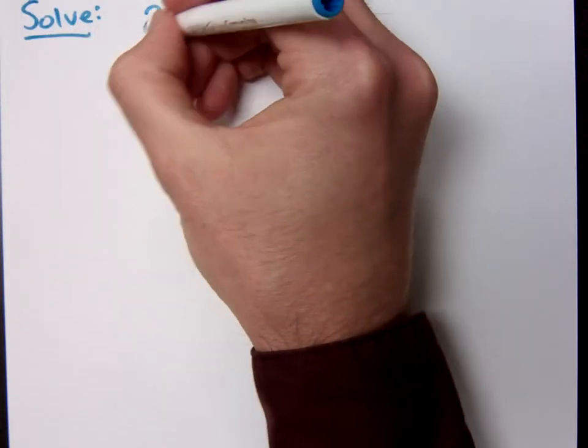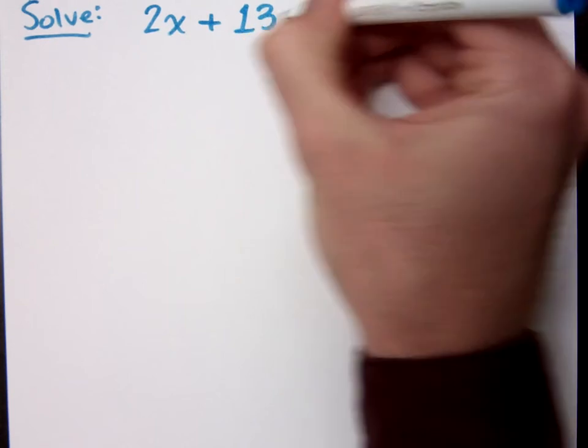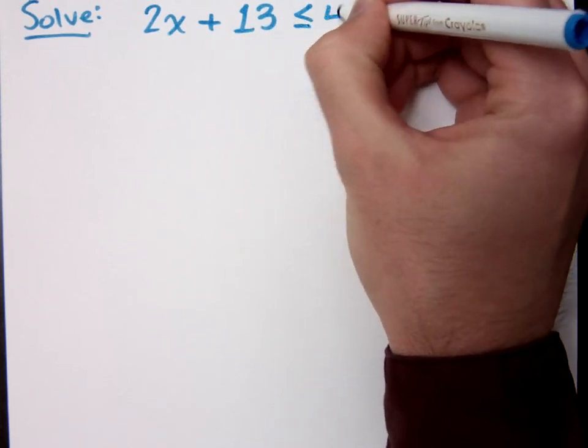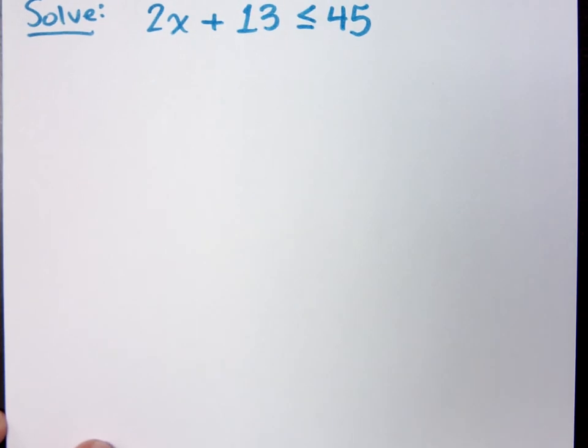Let's see what you guys can do with solving this inequality. I want to say 2x plus 13 is less than or equal to 45. I said to solve inequalities, we're pretty much going to be solving them just like equations, unless we happen to be dividing by or multiplying by a negative number. So how do I go about solving this inequality?